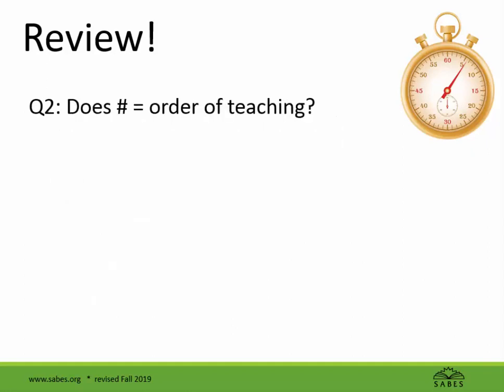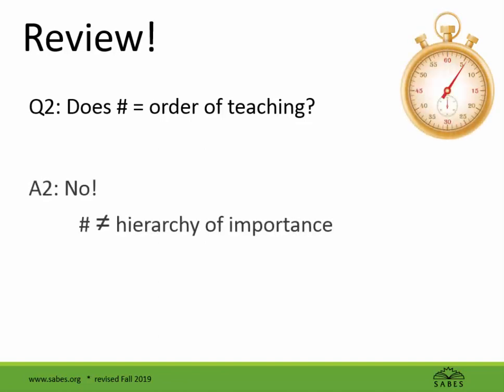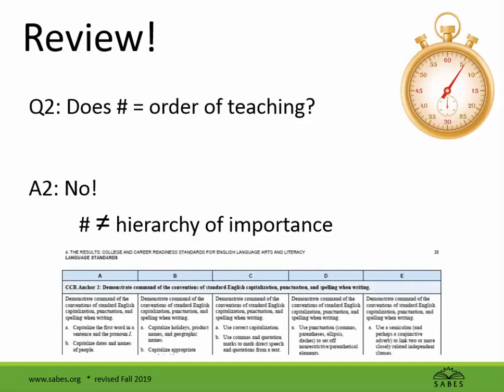Question number two: Does the numbering of the standards mean an order in which they should be taught? No — the numbers are just to keep track and do not indicate a hierarchy of importance. However, once you get into the actual standards, you will see that there are five levels represented by the capital letters A through E, corresponding to grades K–1 up through grades 9–12.